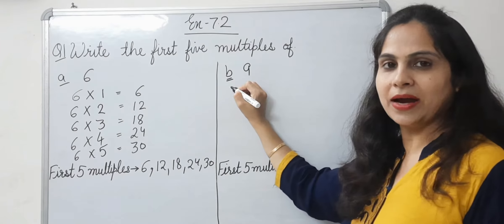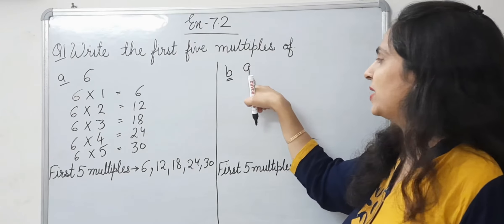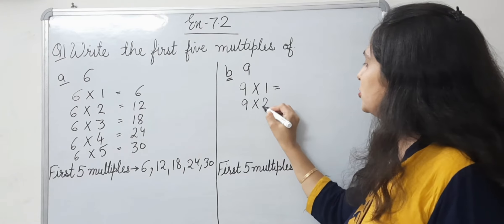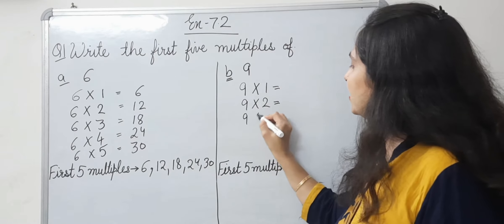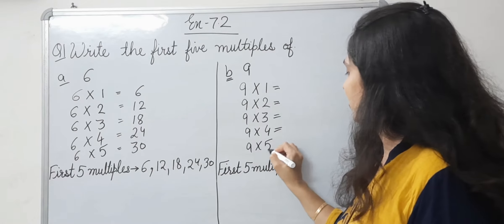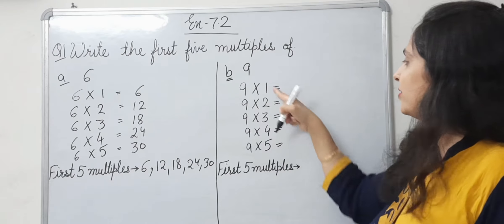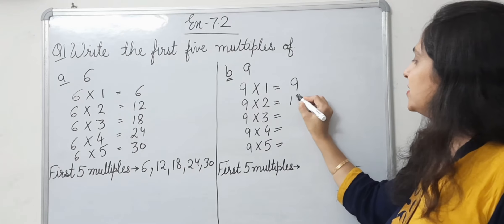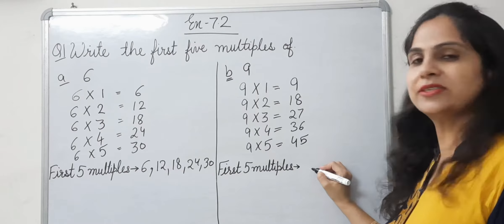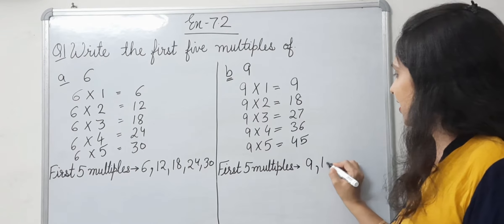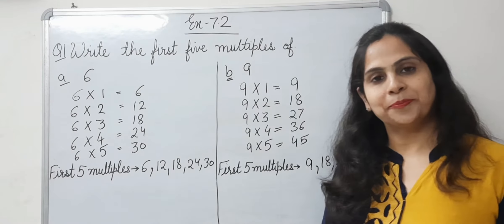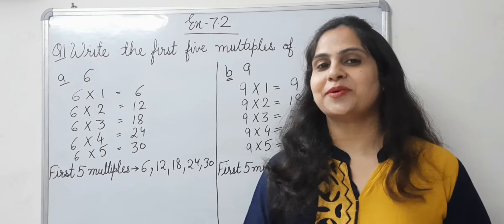Now let's do part B: find the first 5 multiples of 9. Same way, write 9 1s are 9, 9 2s are 18, then 27, then 36, then 45. In this way you will complete question number 1.